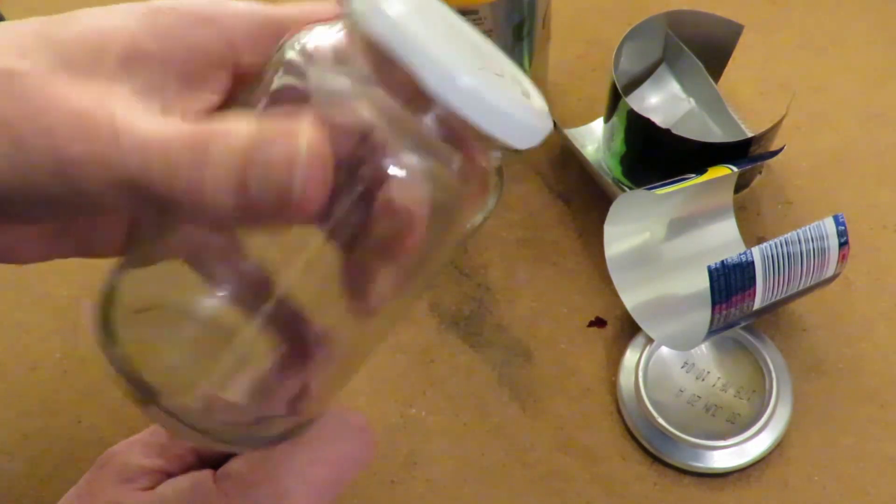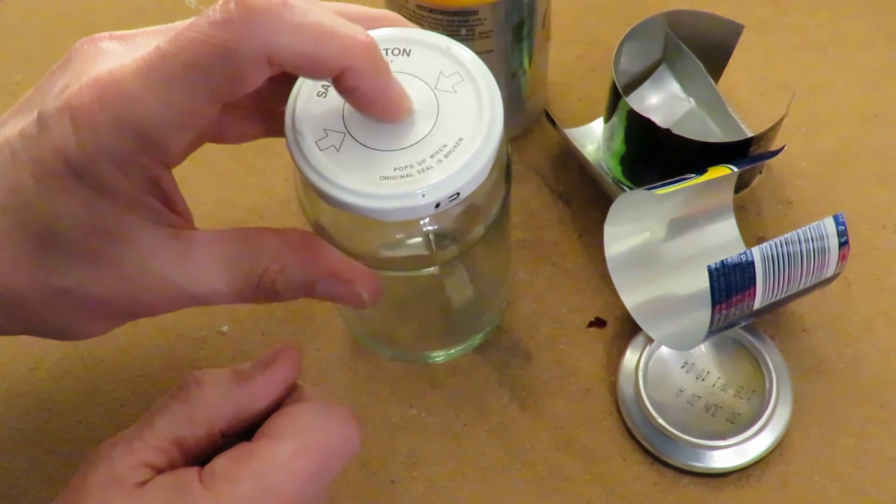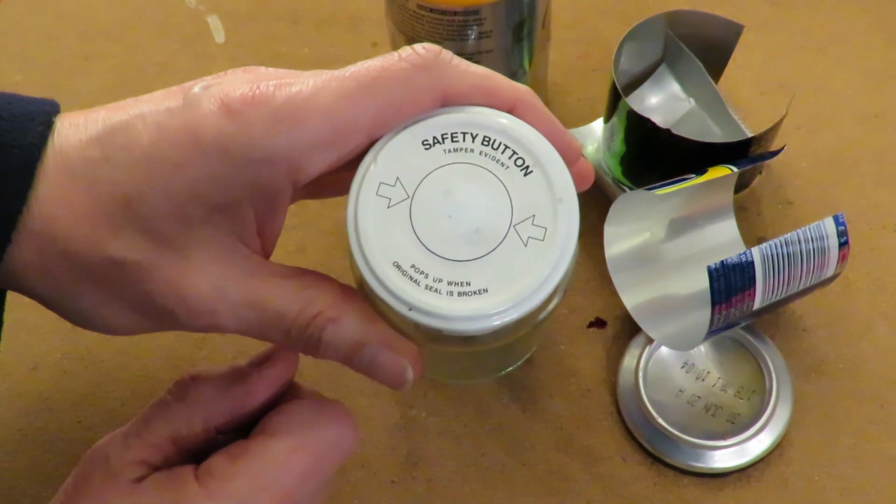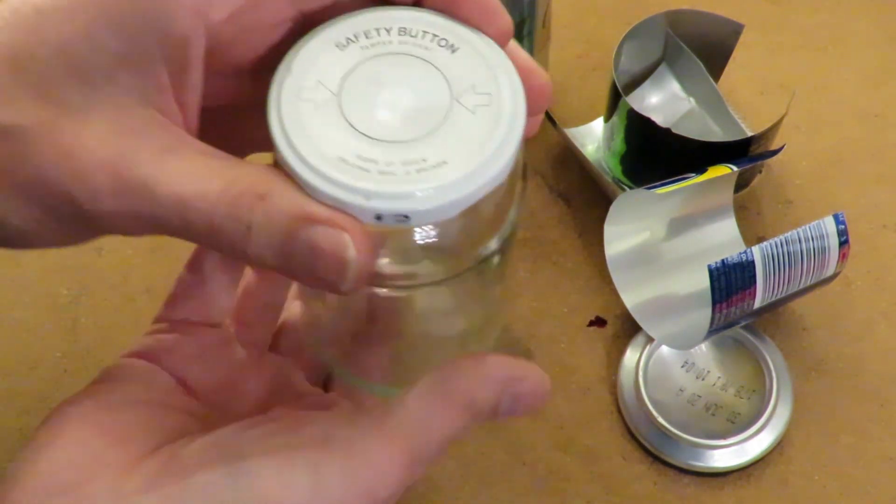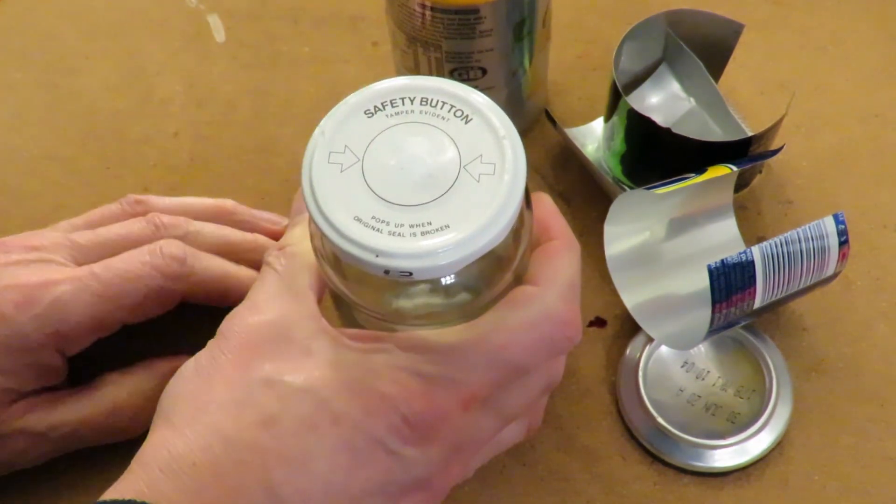The other thing that occurred to me is I've got this jam jar with its safety button, as they call it, normally held in place by a slight vacuum inside. And then as soon as the seal is broken, that pops up.